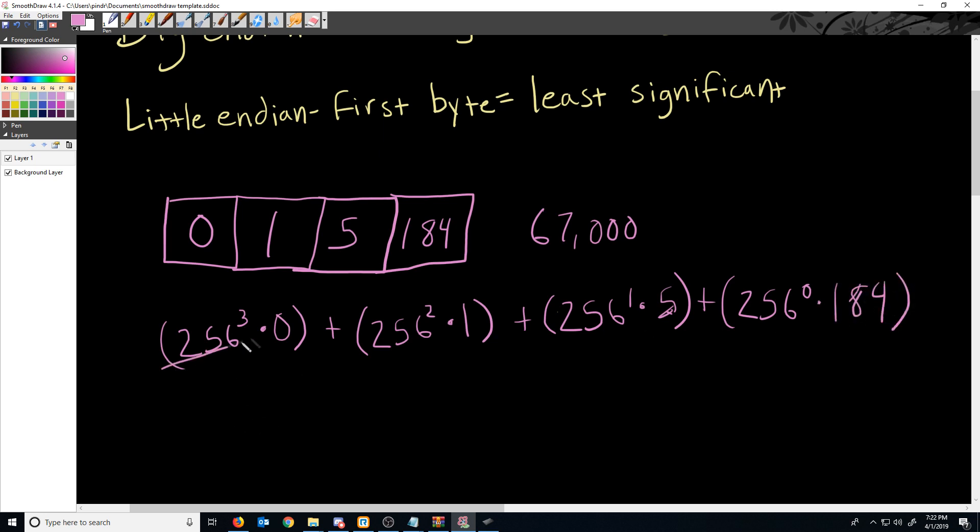So this cancels out to zero. This will come out to 65,536 multiplied by one, which is just the same thing. This will come out to 256 multiplied by five, which would be 1,280. And then this would come down to one times 184, which would just be 184. And then when you add all of these up, you get 67,000.